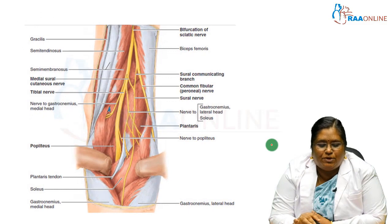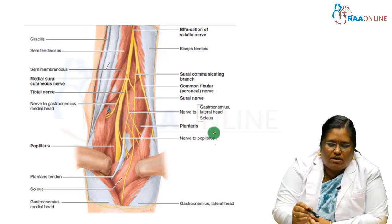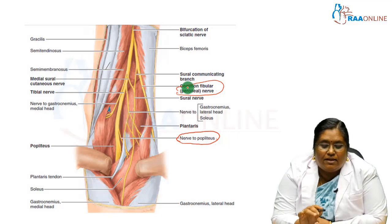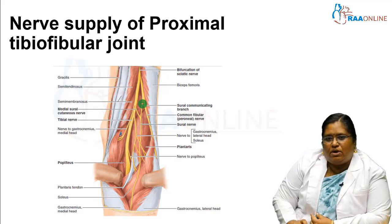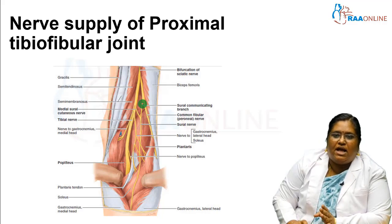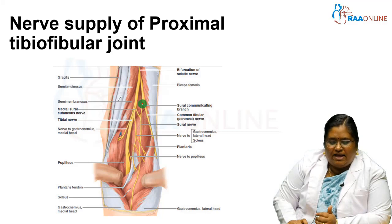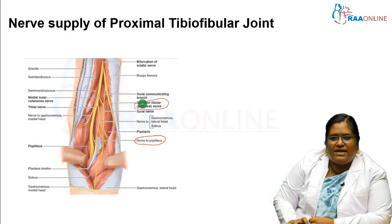The nerve supply of the proximal tibiofibular joint is provided by the nerve to the popliteus and the common fibular nerve. To summarize the proximal tibiofibular joint: it is a plain variety of synovial joint; the articular facets are on the lateral condyle of the tibia and the head of the fibula; ligaments include the capsule, anterior ligament, posterior ligament, lateral collateral ligament of the knee joint, and biceps femoris tendon; arterial supply is from the inferior lateral genicular artery and anterior tibial recurrent artery; and nerve supply is from the common fibular nerve and nerve to the popliteus.